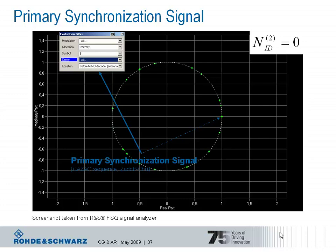Subcarrier is a good keyword. In the frequency domain, the primary synchronization signal occupies 62 out of 72 reserved subcarriers around the unused DC subcarrier, which corresponds to the carrier frequency in the downlink. The remaining 10 subcarriers — 5 on the left-hand side and 5 on the right-hand side — are not used for any transmission; we can call them guard subcarriers.